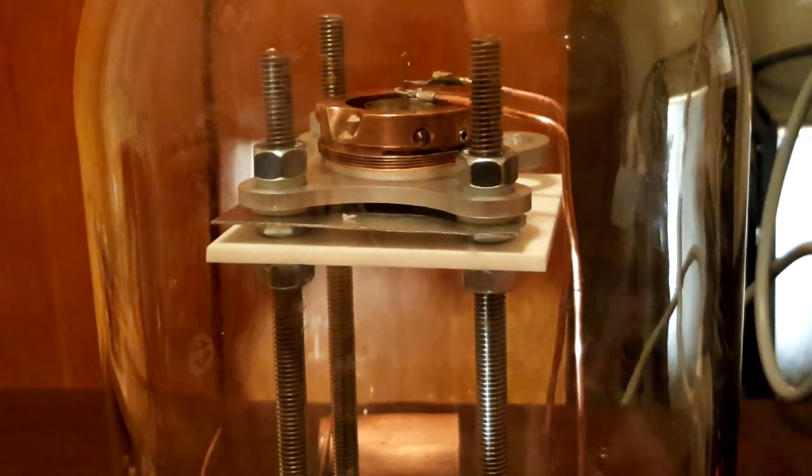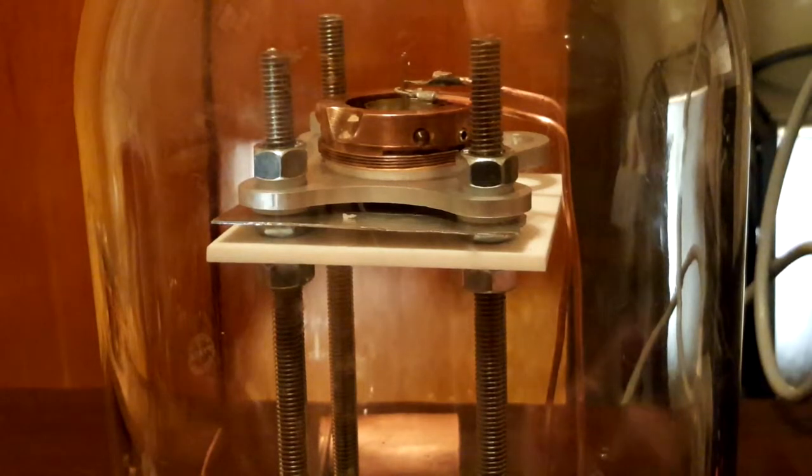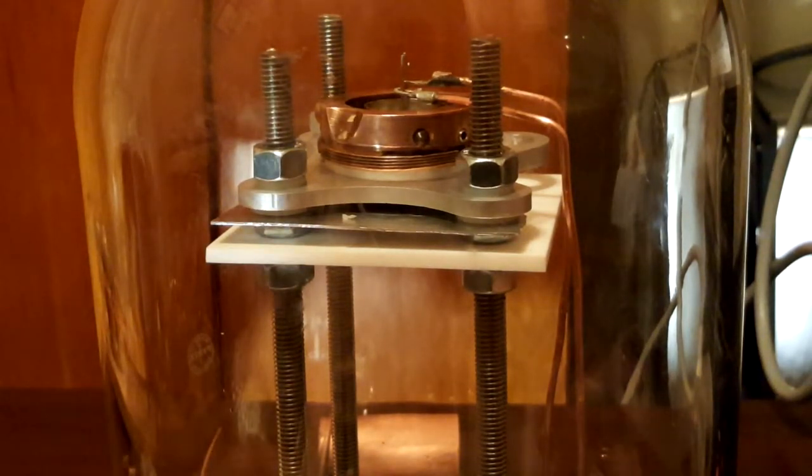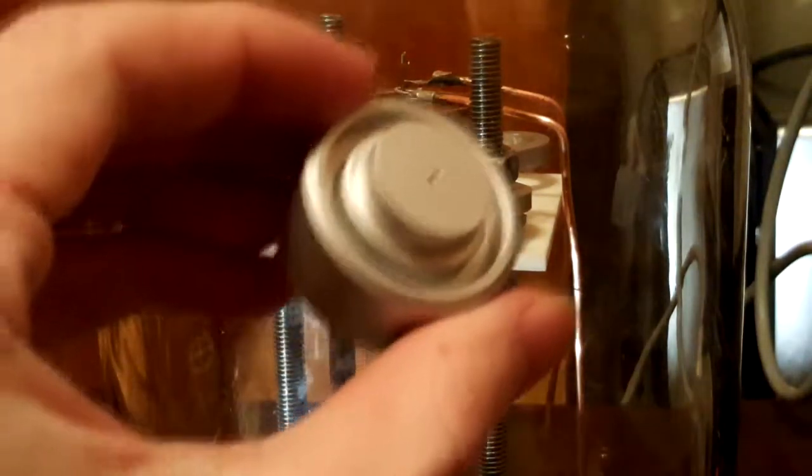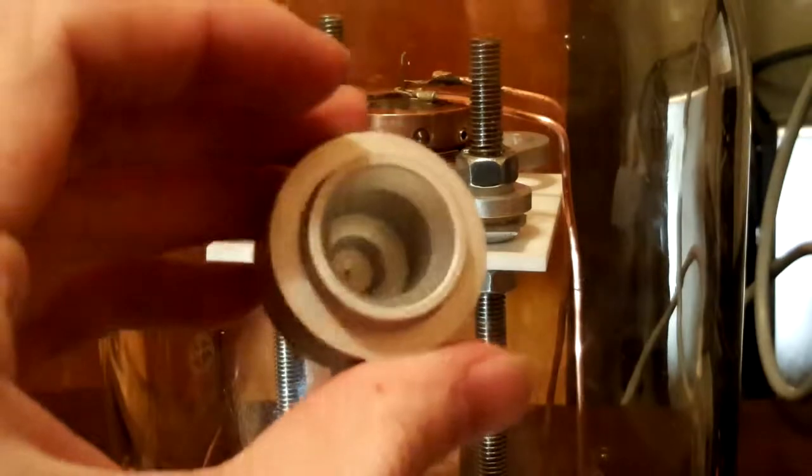Below the Wehnelt is a macor ceramic plate. Why I chose macor is that it's non-porous, so it's not going to trap gas molecules in there, and also it's pretty easy to machine. Inside this I drilled a hole to house this right here—this is the anode.